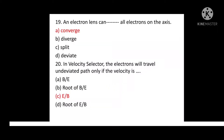Question No. 19: An electron lens can bring all electrons on the axis to? Option A: Converge. Option B: Diverge. Option C: Split. Option D: Deviate. Correct answer is Option A: Converge.